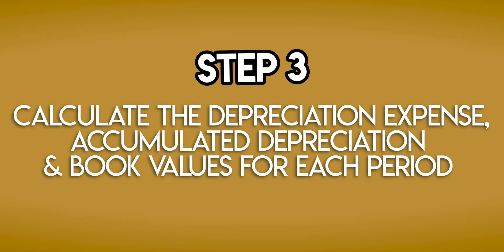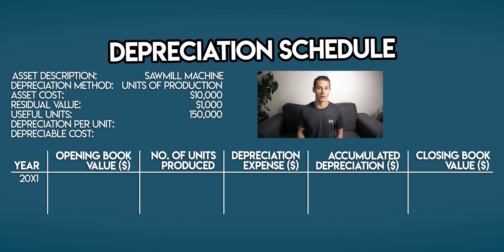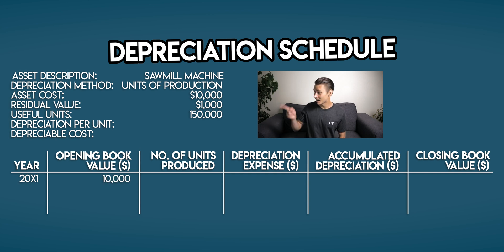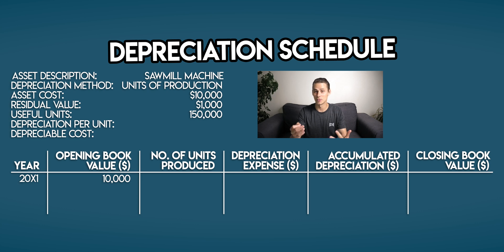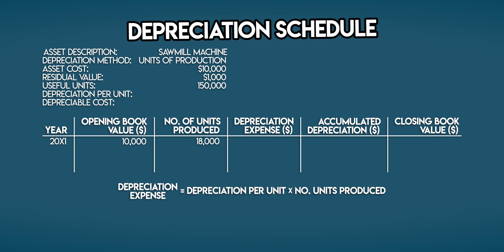Step 3: Calculate the depreciation expense, accumulated depreciation, and book values for each period. Now it's time to fill out the schedule, starting with year one — the first accounting period. Your opening book value is the carrying amount of your sawmill machine at the start of the year, and in year one this is $10,000, the same as your asset cost. Your business carefully records the number of units produced, and in year one that was 18,000 units of timber.